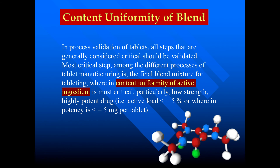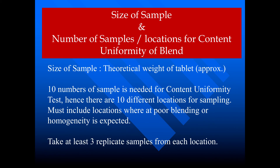All steps that are generally considered critical should be validated. The most critical step among the different tablet manufacturing processes is the final blend mixture, wherein content uniformity of the active ingredient is most critical, particularly when dealing with low strength, high potent drugs where the active load is less than 5%. We have to draw samples from the final tablet blending mixture, and the sample size should be approximately the theoretical weight of the tablet. Ten samples are needed for the content uniformity test.